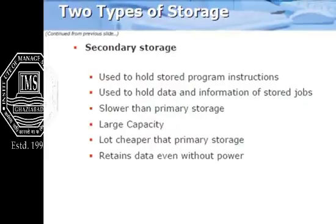Secondary memory is used to hold stored program instructions and data information of a stored job. It is slower than primary memory but larger in capacity, much cheaper than primary storage, and retains data even without power — meaning it is non-volatile.